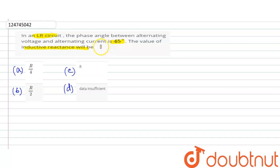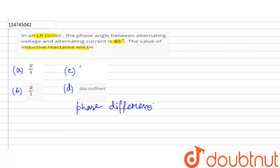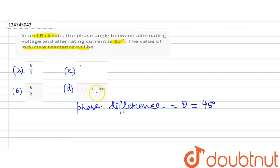We will see the phase difference. The phase difference is equal to theta, which is equal to 45 degrees. What are the options? The options are: R by 4, R by 2, or C is 4, or data insufficient.